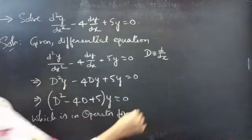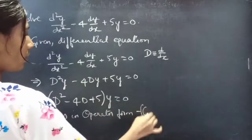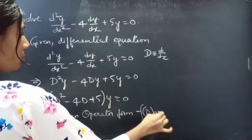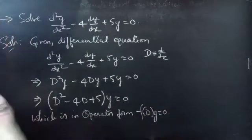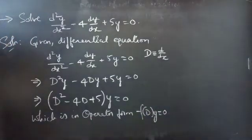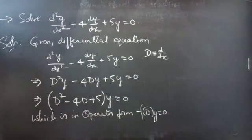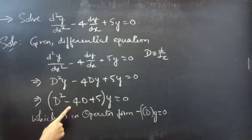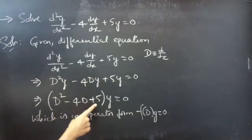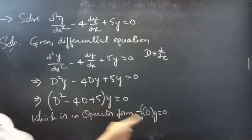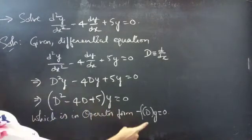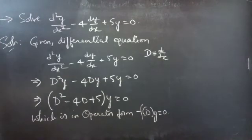So f(D) into y equals to 0, where f(D) equals to D squared minus 4D plus 5. Simply, by comparing these two, we will get f(D).